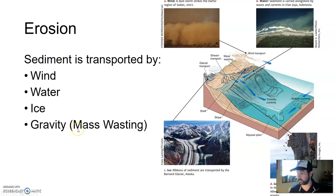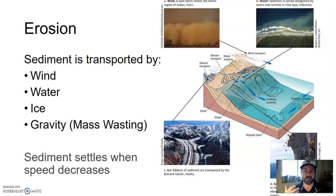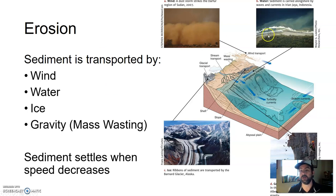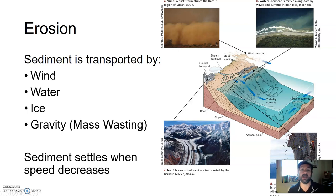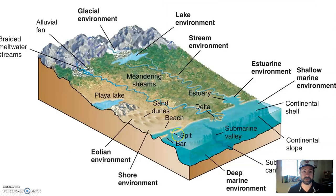We're taking the sediment and piling it up somewhere. The sediment settles and deposits when the speed decreases — when the wind dies down, wherever the water slows down, wherever the ice stops, and wherever gravity stops it, wherever the earth stops gravity from pulling things down.